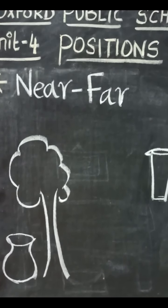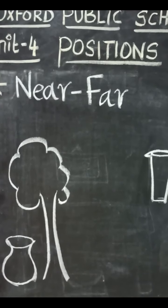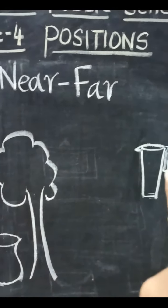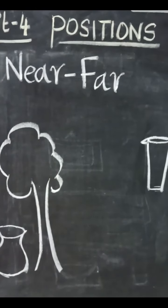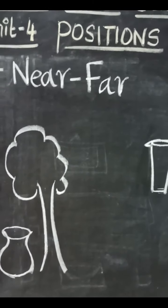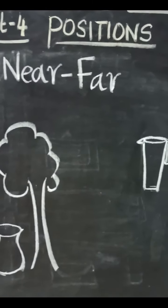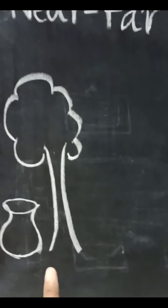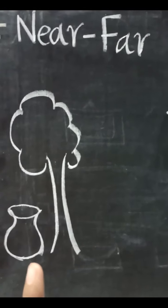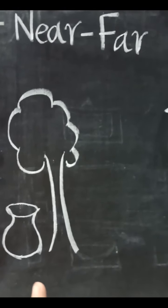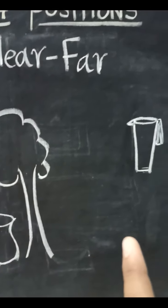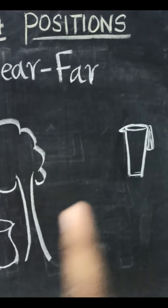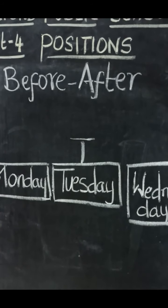And there is a jug which is far from the tree. Far means at a distance, not close by but at a distance. So this is the example for near and far. The pot is close to the tree, so it is near the tree. And the jug is far from the tree. The last position we are going to learn about.